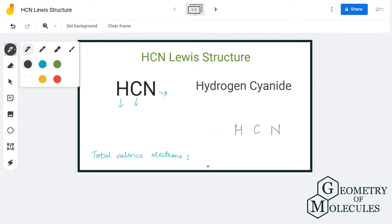To understand the Lewis structure of any molecule, it is essential to know the total number of valence electrons in the molecule.